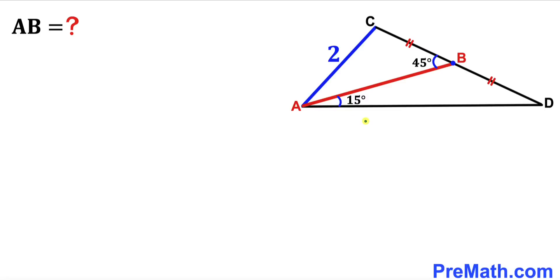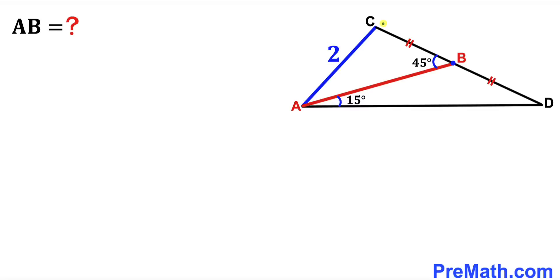Welcome to pre-math. In this video we have got this triangle ADC along with this segment AB, and as a result we get these angles 15 degrees and 45 degrees. Moreover, this side length AC is 2 units, and this segment BC is equal to this segment BD. Our task is to find the length of this segment AB.